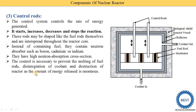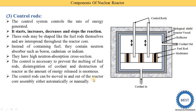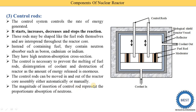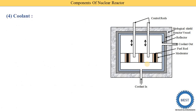Control of chain reactions is necessary to prevent melting of fuel rods, disintegration of coolant, and destruction of the reactor. The control rods can be moved in and out of the reactor core assembly either automatically or manually. When the control rod is fully inserted into the reactor core the chain reaction stops; when removed, the chain reaction starts or increases.